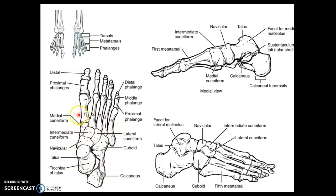Move distally, and we have five metatarsals, numbered one through five from the big toe to the little toe.